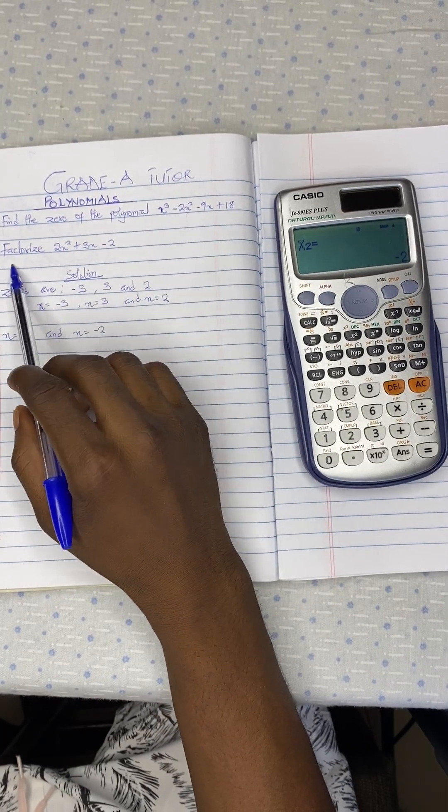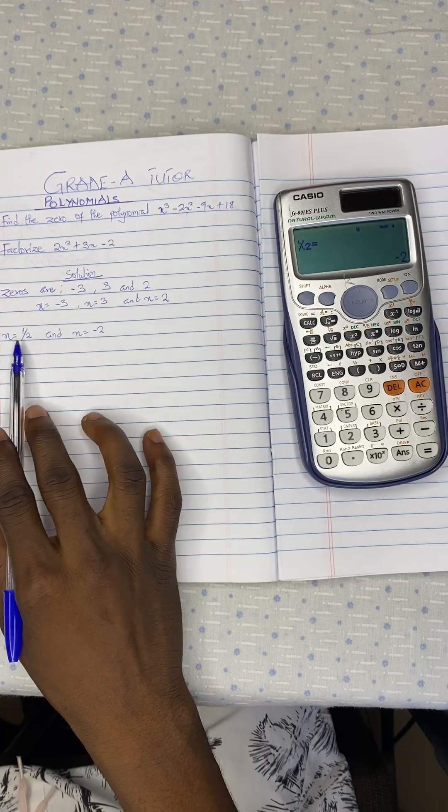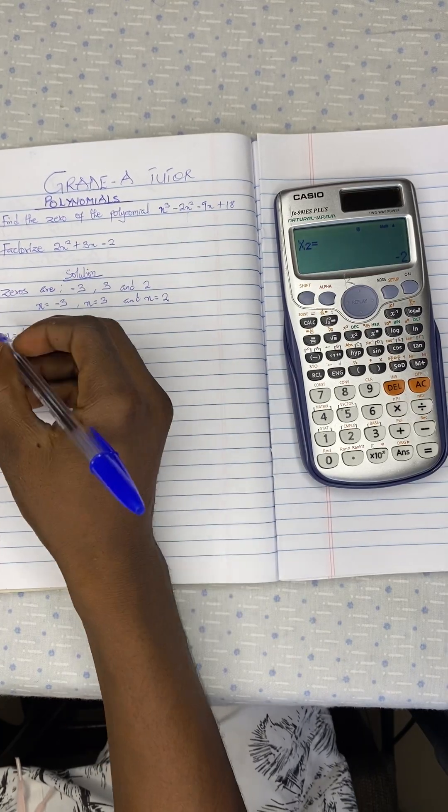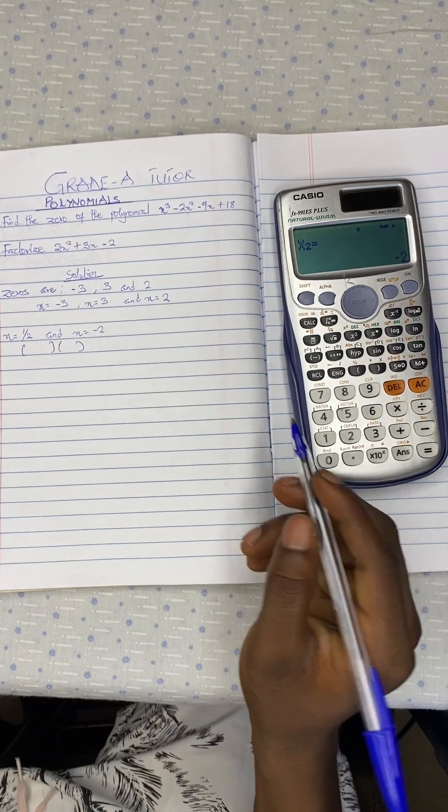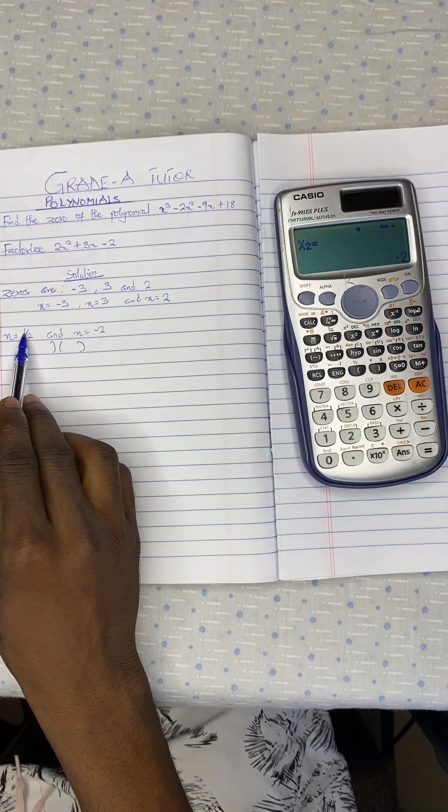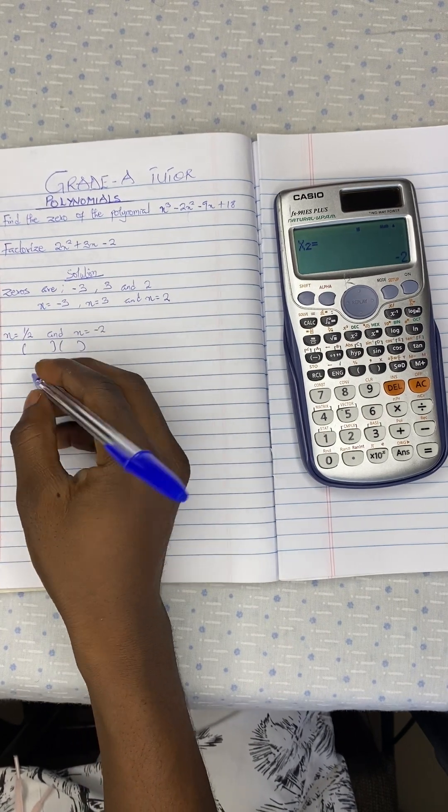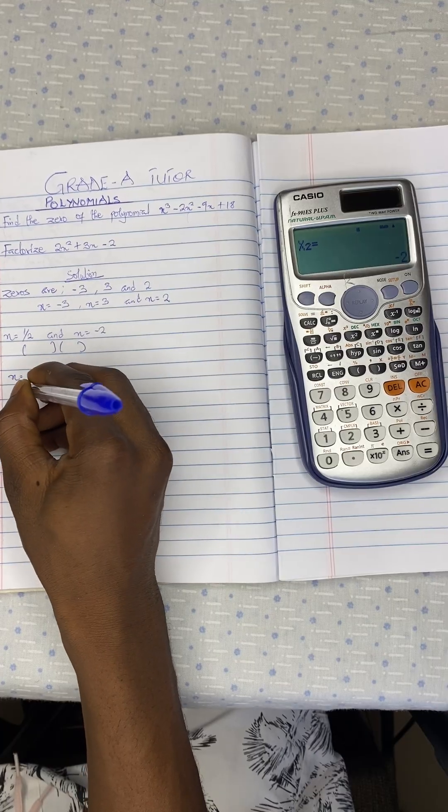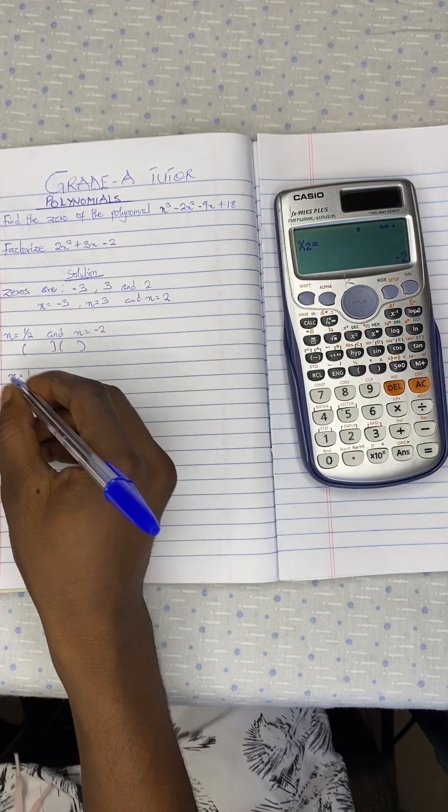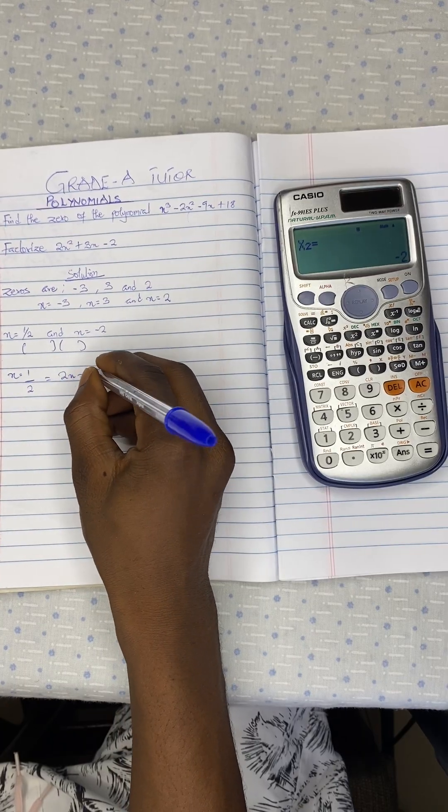Now the question said we should factorize. But that is the equation, right? So we need to factorize, and under factorization, you are supposed to get 2 brackets like this. So for x equal to 1 over 2, we are going to group like terms. Cross multiplication, you are going to get 2x is equal to 1.